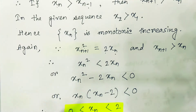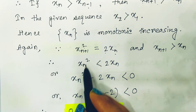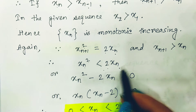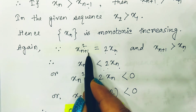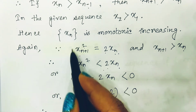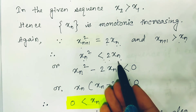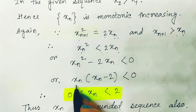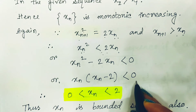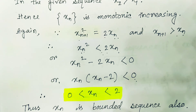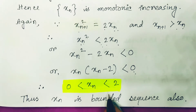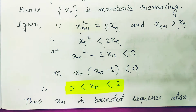Since xn+1² = 2·xn and xn+1 > xn, we have xn² < 2·xn, which means xn·(xn - 2) < 0. This implies xn < 2. Since all terms of the sequence are positive, xn lies between 0 and 2. Thus the given sequence is bounded. Since it is both monotonically increasing and bounded, the sequence is convergent.